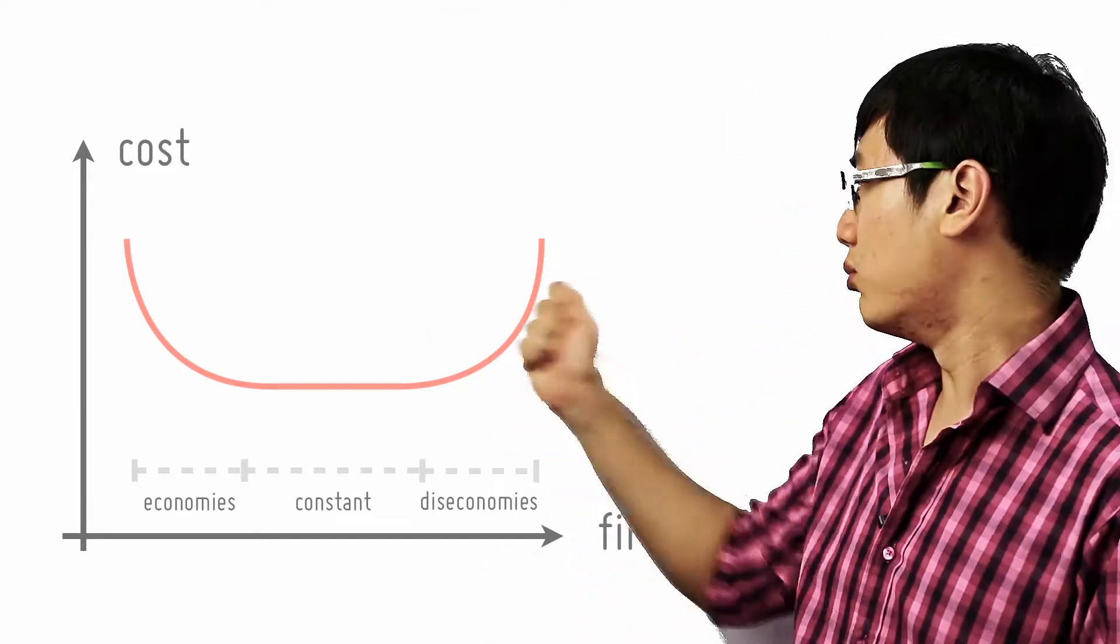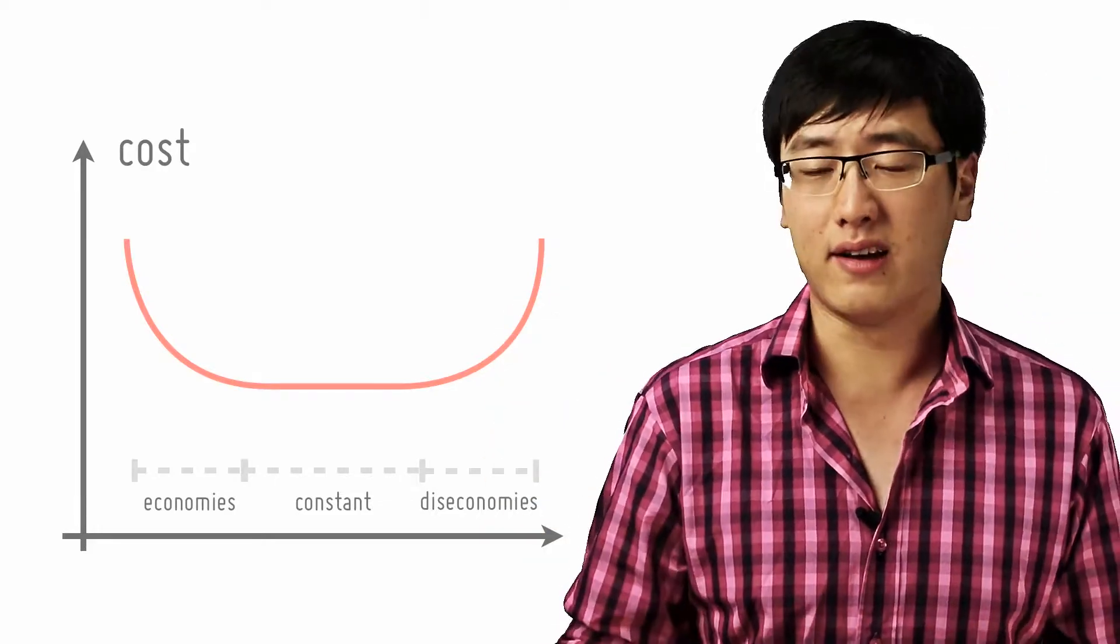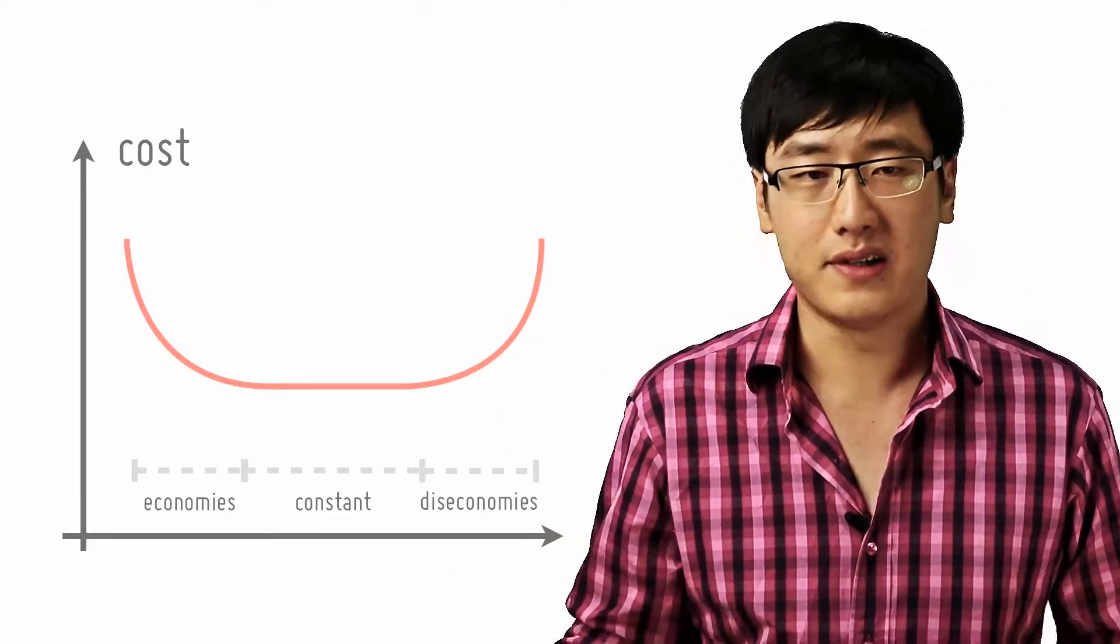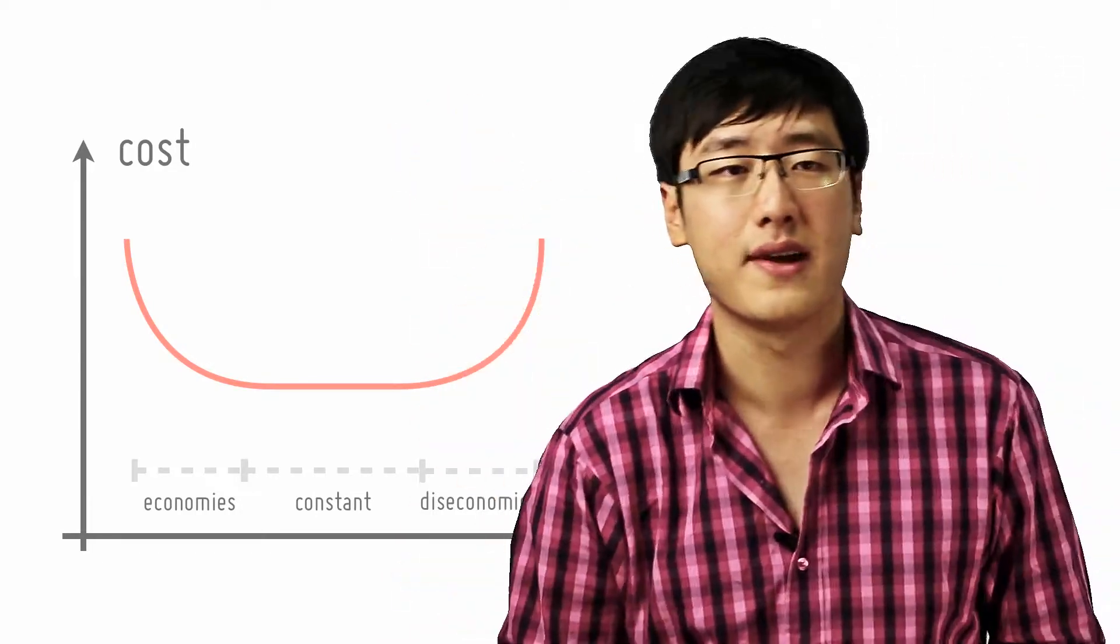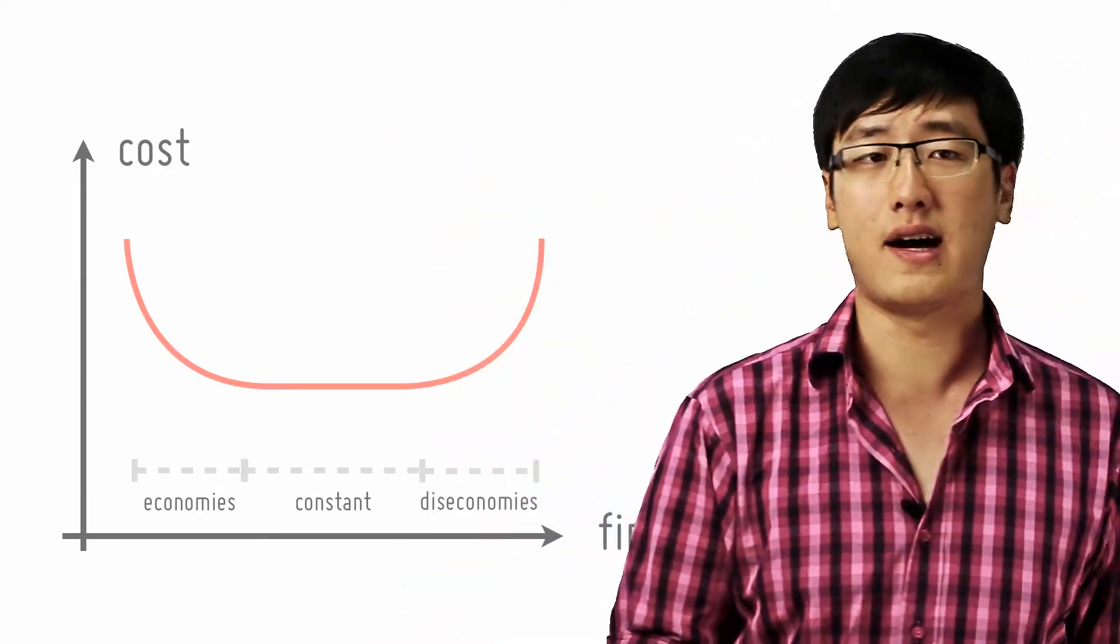by one time and you move outwards by one unit, you're actually producing more than one time the output, and hence, your cost per unit actually decreases. So this is the reason why your LRAC goes down at first.